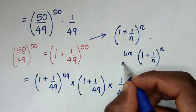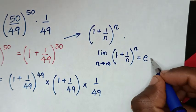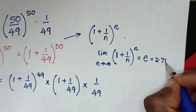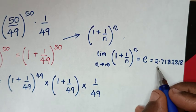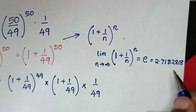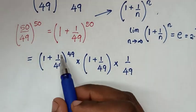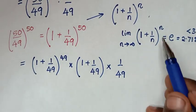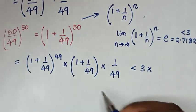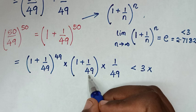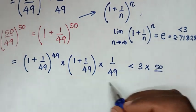From Euler's formula: the limit of (1 plus 1 over n) bracket power n, as n approaches infinity, equals e, and e equals approximately 2.7182818. Since 2.718 is less than 3, this Euler's form expression is less than 3. Then times (1 plus 1 over 49).